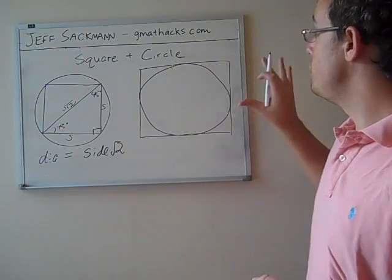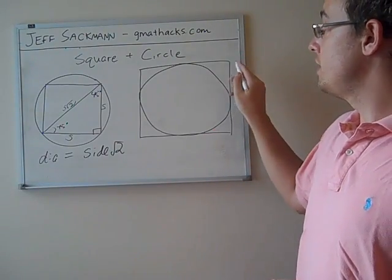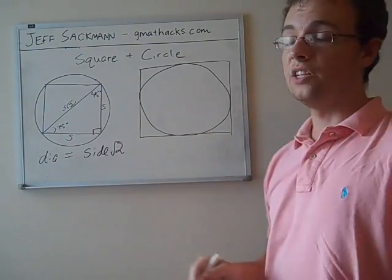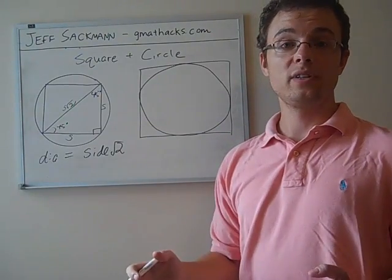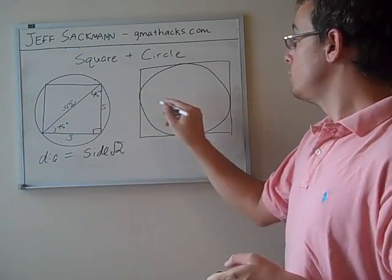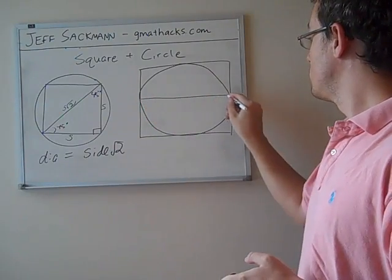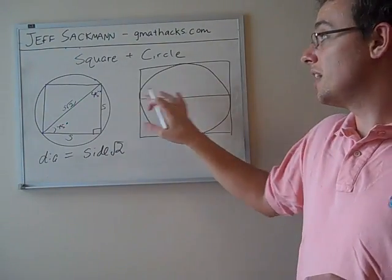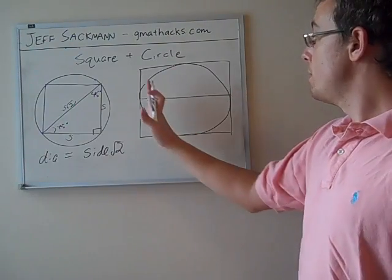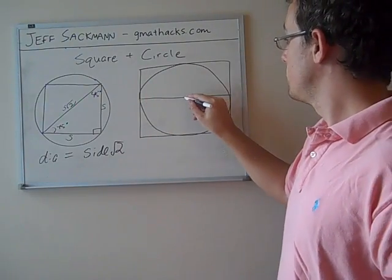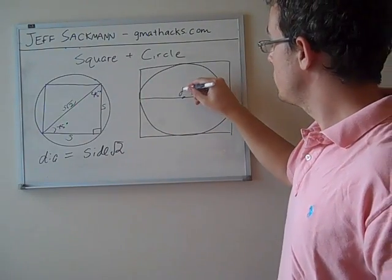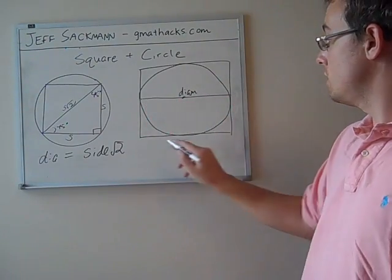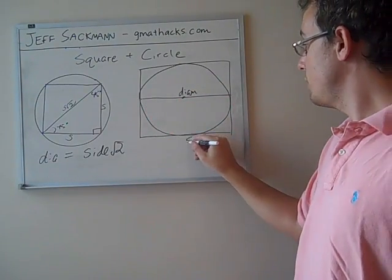So that leads us to the other diagram I have up here, a square that circumscribes a circle, or a circle inscribed in a square. This one is more simple. So let's draw a diameter across the circle. Notice that this is not only the diameter of the circle, but is the length of one side. So it's the diameter, but it's the same length from here to here as the length of this side down here.